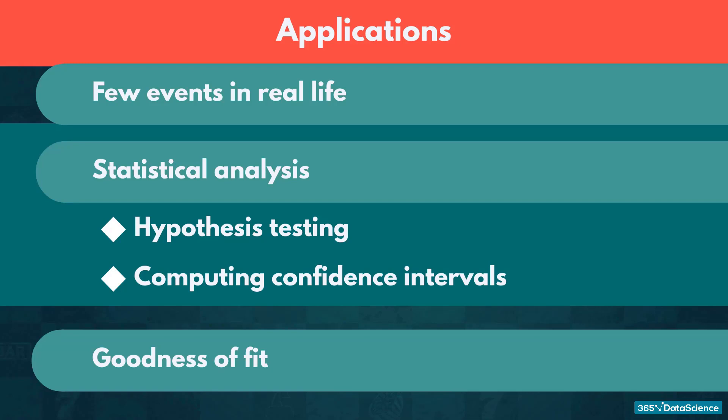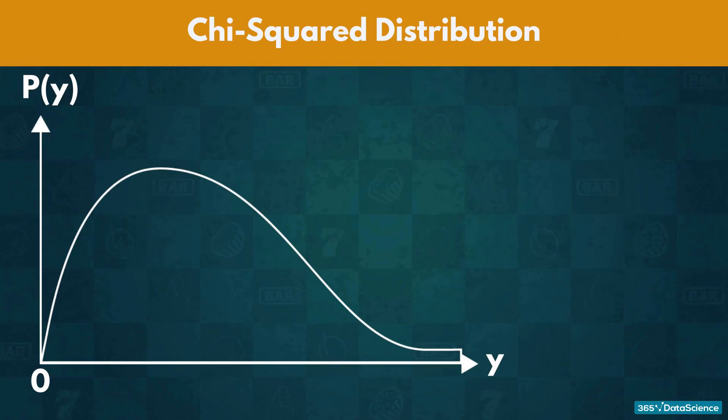Alright, now let's explore the graph of the Chi-Squared Distribution. Just by looking at it, you can tell the distribution is not symmetric, but rather asymmetric.